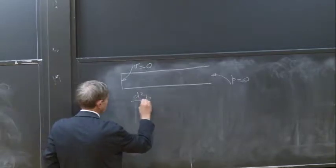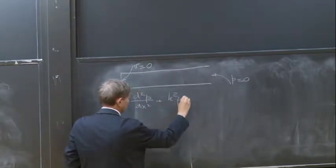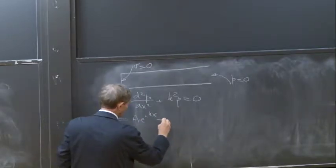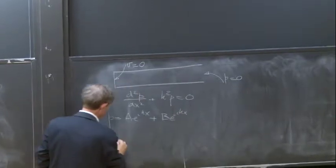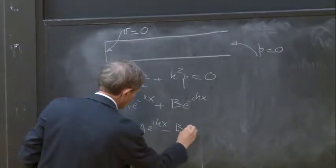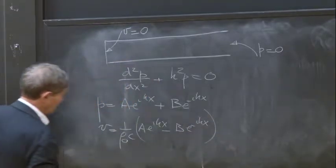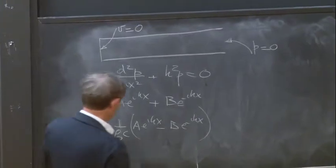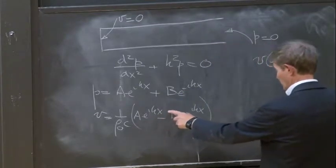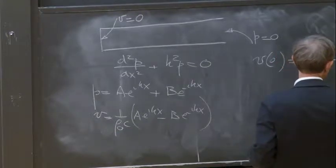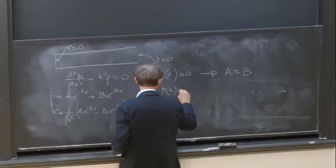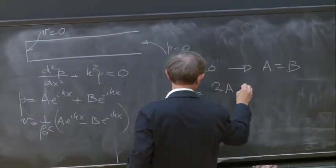The wave equation is d²p/dx² + k²p = 0. The solution is p = A e^(ikx) + B e^(-ikx), and the velocity is (1/rho0 c)(A e^(ikx) - B e^(-ikx)). Applying the boundary condition v(0) = 0 gives A = B.